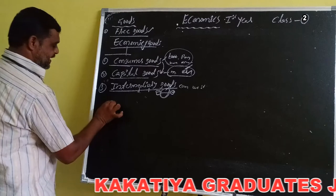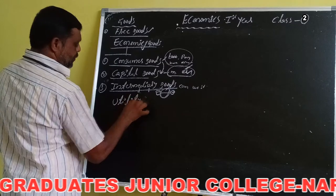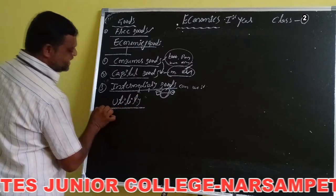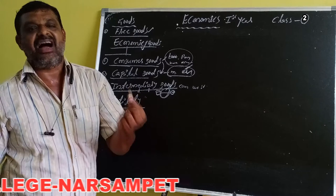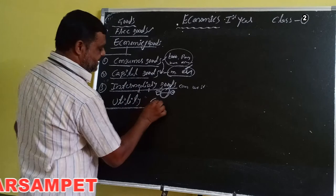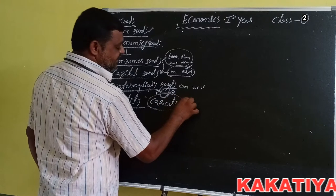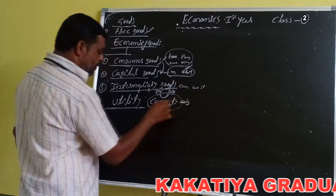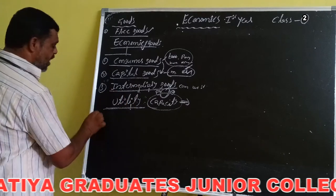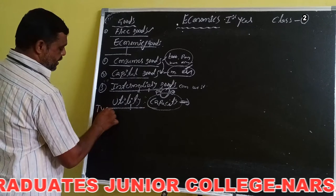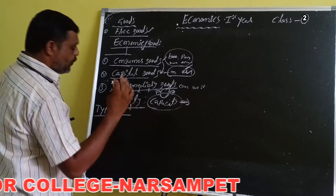Now, utility. Utility means the capacity of goods and services to satisfy human wants. The capacity of goods and services to satisfy human wants is known as utility. There are four types of utility.